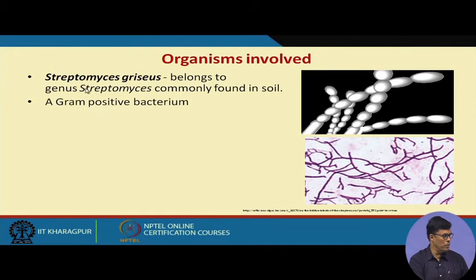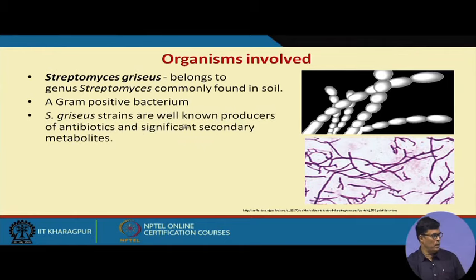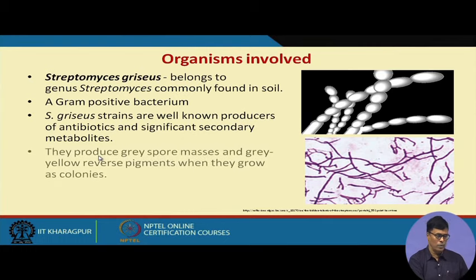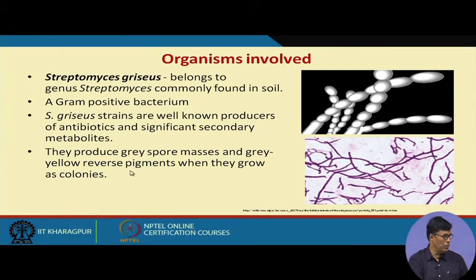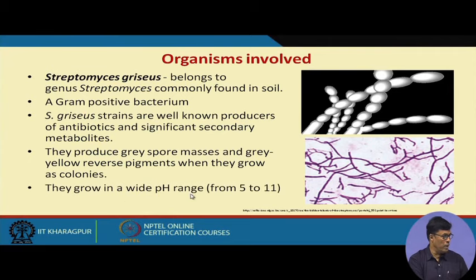The organism Streptomyces griseus is used for the production of streptomycin. It is commonly found in the soil and is a gram-positive bacterium. Streptomyces griseus strains are well-known producers of antibiotics; significantly, streptomycin is a secondary metabolite. They produce gray spore masses and gray-yellow reverse pigment when grown as a colony, and they grow at a wide pH range of 5 to 11.